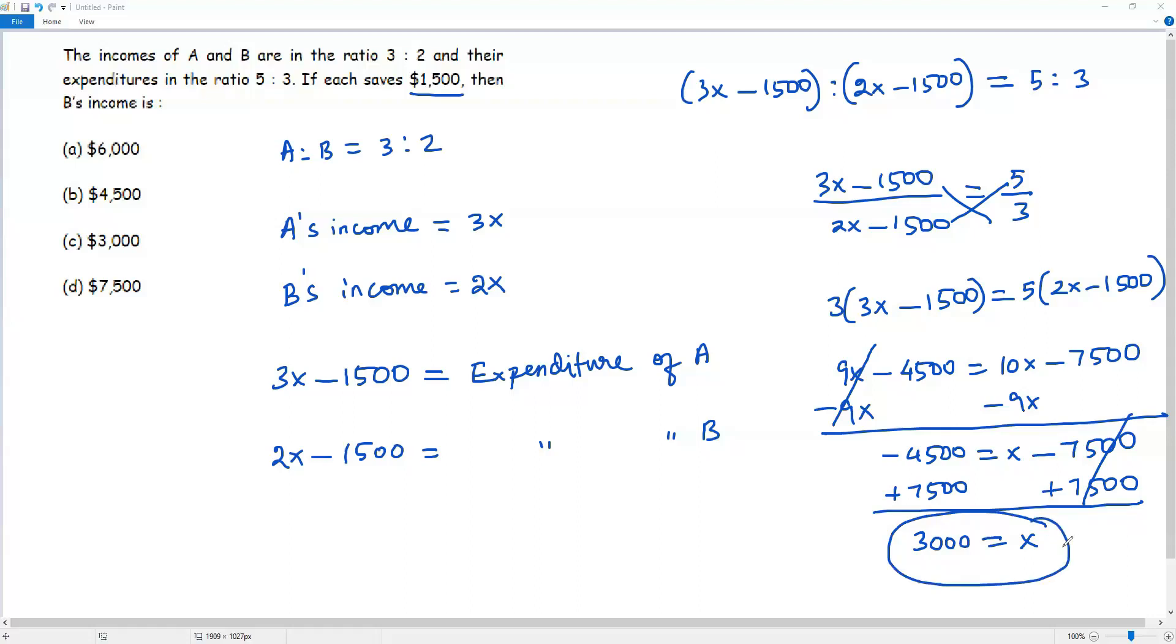To get the income of B, I have to plug in x = 3000 into 2x, because 2x refers to income of B. So 2x, the value of x is 3000. 2 times 3000 is 6000. So B's income is $6000. The correct answer choice is option A.